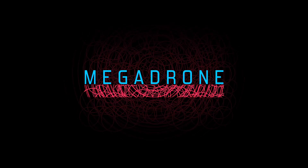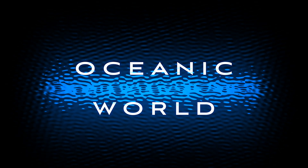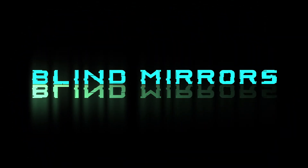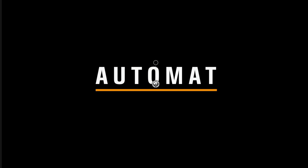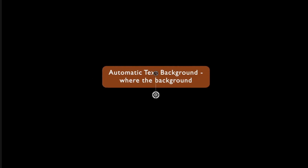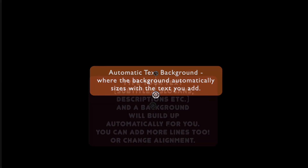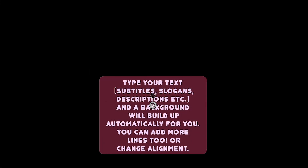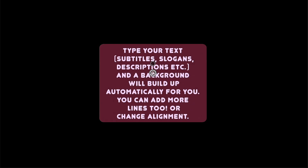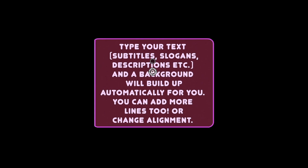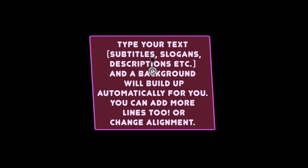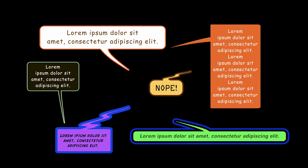Automatic Underlined Text, which you can use for animated titles — the automatic means the underline automatically sizes with the text as you edit it. And Automatic Text Background, where the background automatically sizes with the text you add. These are good for subtitles, description text, slogan text, plus a cool speech bubble preset we'll take a look at in a minute.